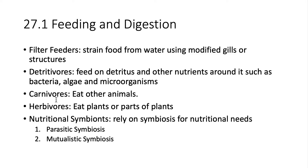We've already covered these terms — detritivores, carnivores, herbivores — so I'm not going to go into those. But I do want to talk about filter feeders. That's a new one. These are going to strain food from water using modified gills. You see these in whales — blue whale, humpback whale. The majority of your whales use this type of feeding system, where water flows through and traps the plankton they eat. These tend to be herbivores, or depending on the type of plankton — phytoplankton or zooplankton — that will determine whether they're herbivores or carnivores.